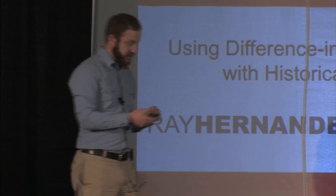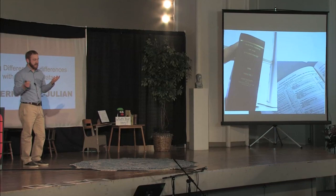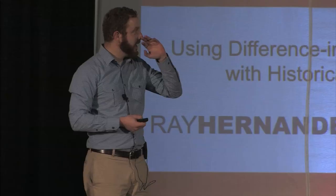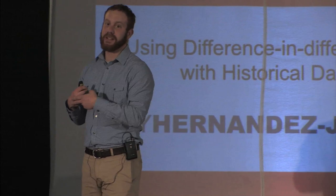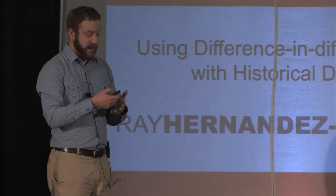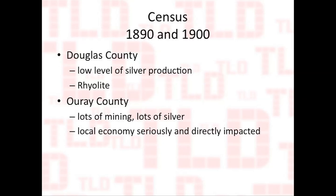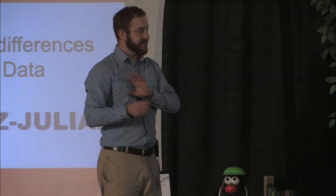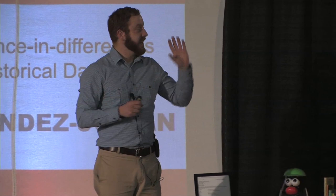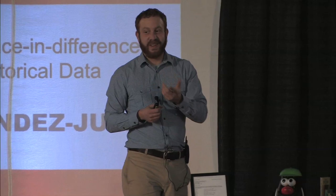Here's where I get my data. This is the 12th Census. I went to the library on campus and found old census books — there's a table with both the male and female population of every county in Colorado from 1900, 1890, and 1880. I picked Douglas County and Uray County. From what I looked up, Uray County had lots of mining and lots of silver. Douglas County started doing some mining but then switched to mining rhyolite — a rock used on the sides of buildings — whose price is not highly correlated to the price of silver.